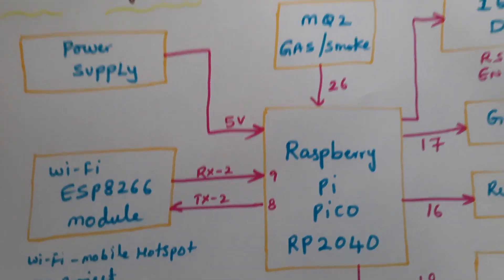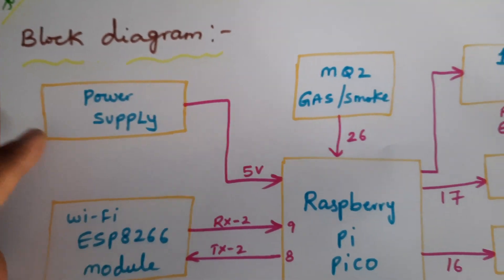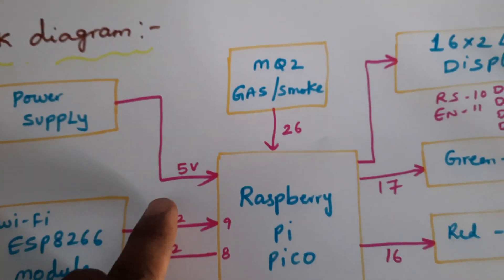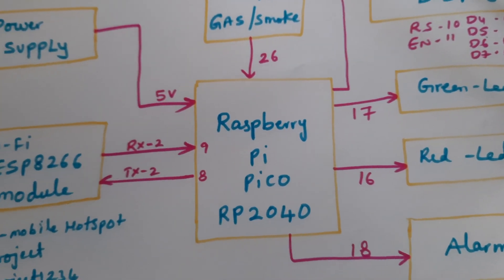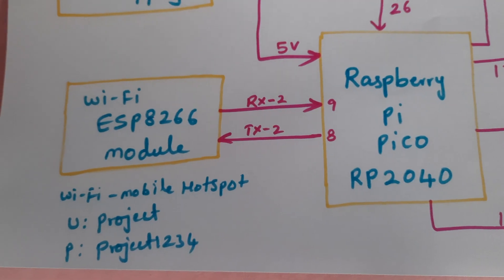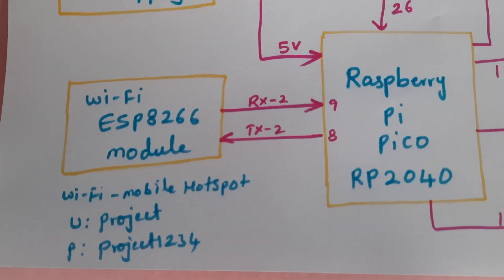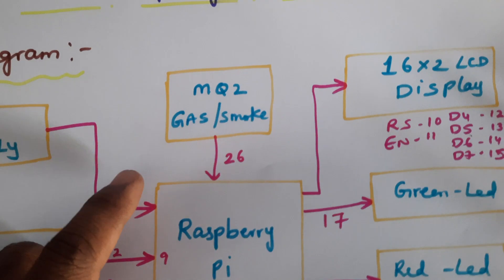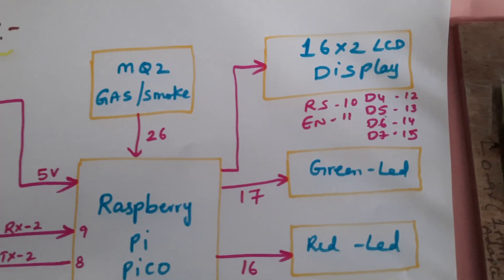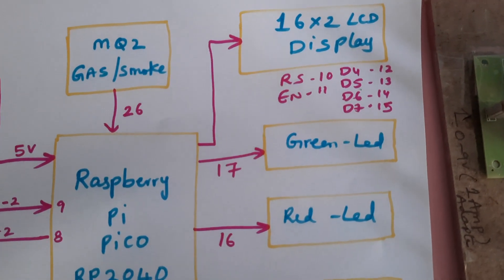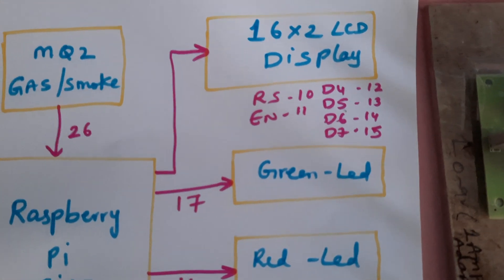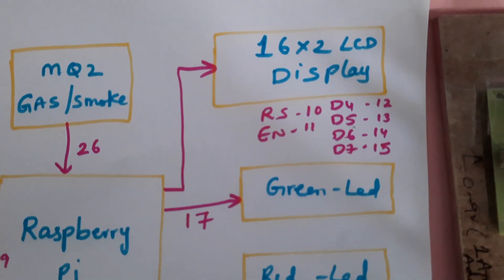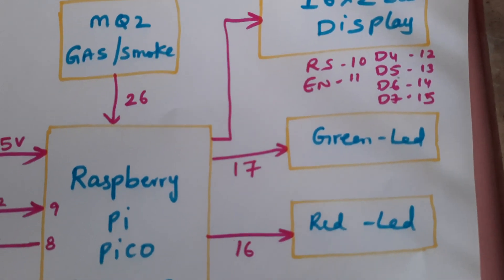We are using a power supply board with a 9-volt adapter providing pure DC 5 volts. Components include a Raspberry Pi Pico RP2040, a Wi-Fi ESP8266 module, an MQ2 gas and smoke sensor, and a 16x2 LCD display with RS, EN, D4, D5, D6, D7 connected to GPIO pins 10, 11, 12, 13, 14, and 15.